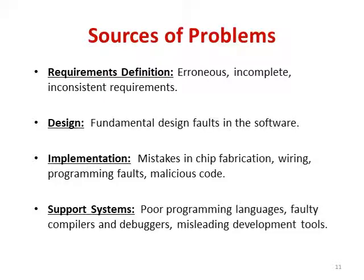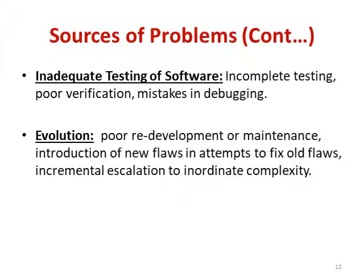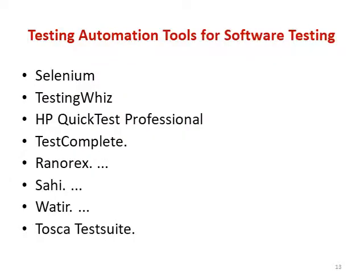Sources of problems include requirement definition, design, implementation, support systems, inadequate testing of the software, and evolution. There are different software testing automation tools. Popular ones include Selenium and HP QuickTest Pro, among many more.